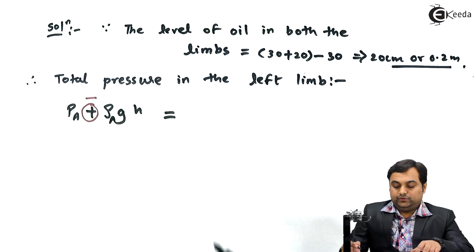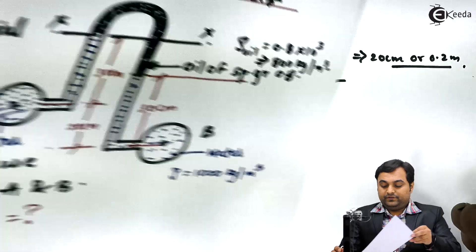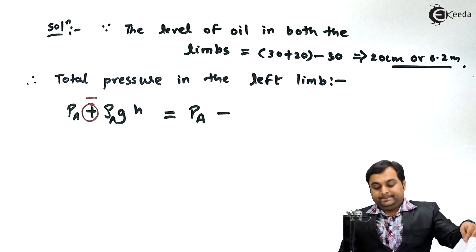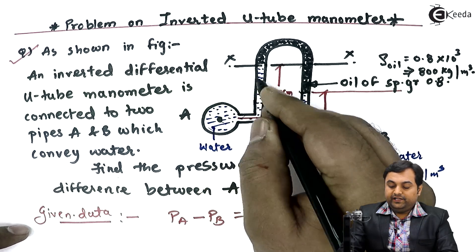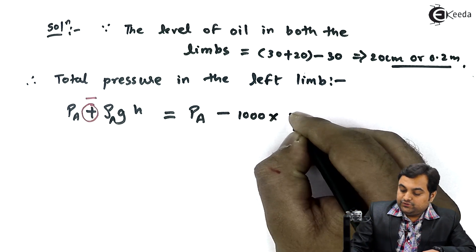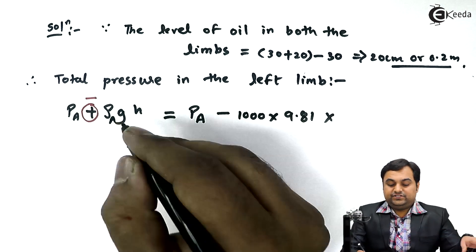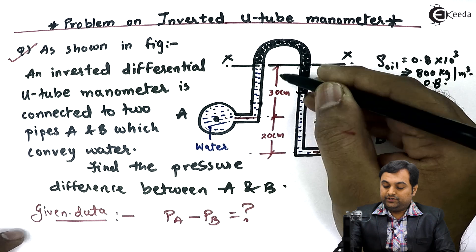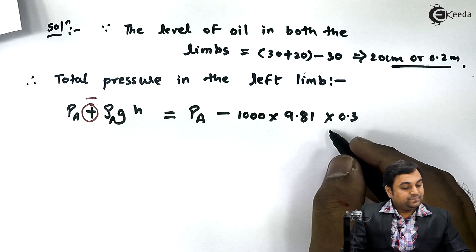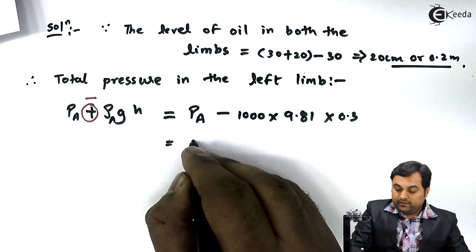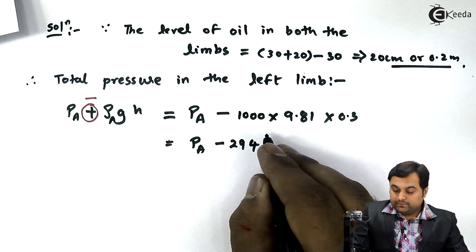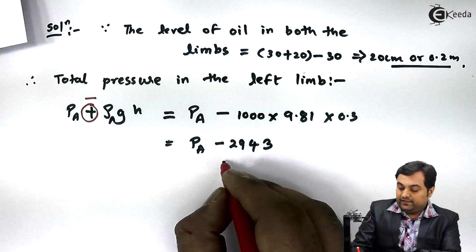This will equal the total pressure in the right limb. Computing the left limb value: pressure at point A is unknown, minus density of water (1000) into g (9.81) multiplied by height of water in the left limb (30 cm = 0.3 m). This gives P_a − 2943. I'll keep this as Equation 1.